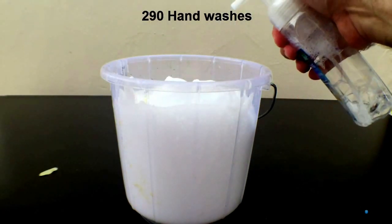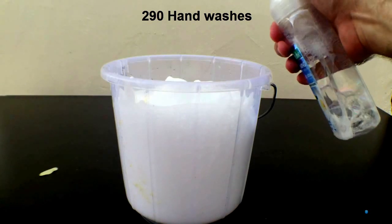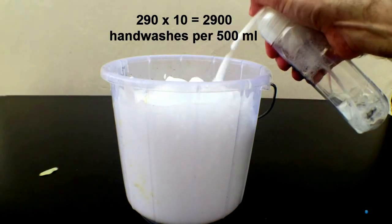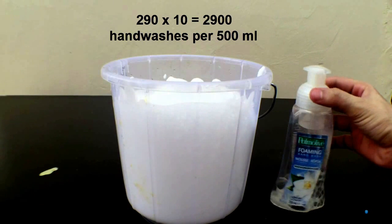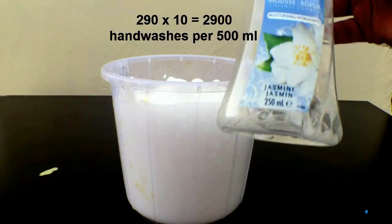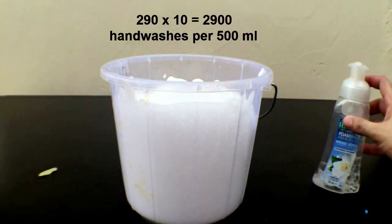Multiply that by 10 and you have 2,900 hand washes per bottle. That's 10 times more than what you will get with the standard technique.